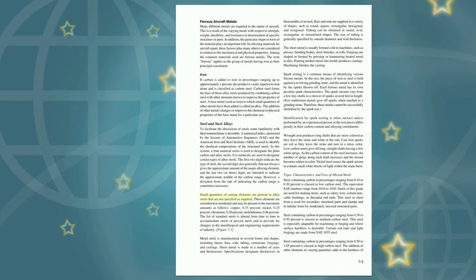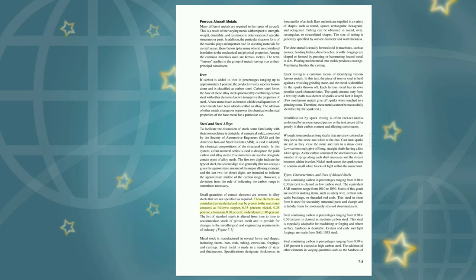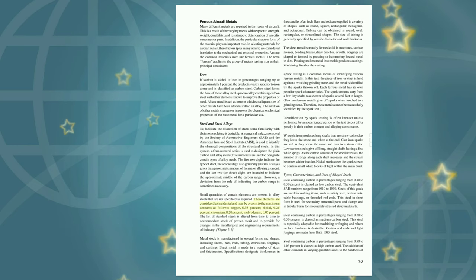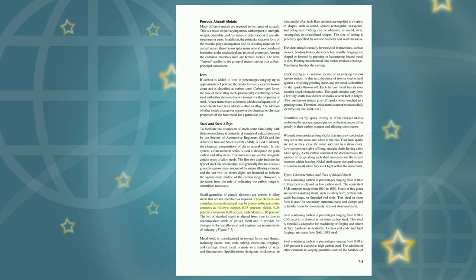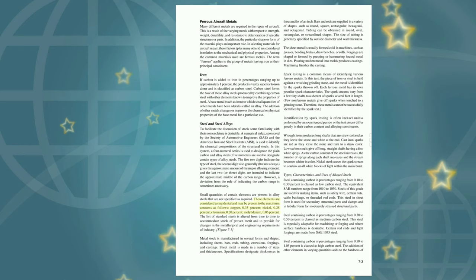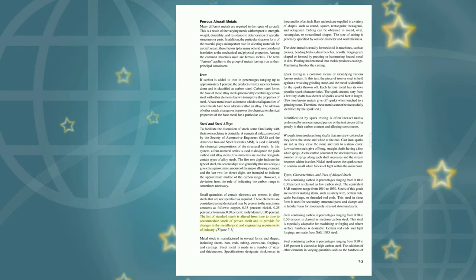Small quantities of certain elements present in alloy steels that are not specified as required are considered incidental and may be present to the following maximum amounts: copper 0.35%, nickel 0.25%, chromium 0.20%, molybdenum 0.06%. The list of standard steels is altered from time to time to accommodate steels of proven merit and to provide for changes in the metallurgical and engineering requirements of industry.